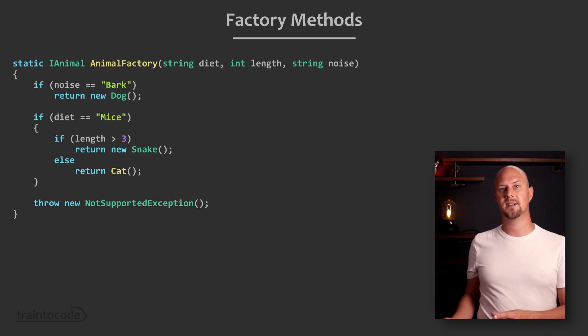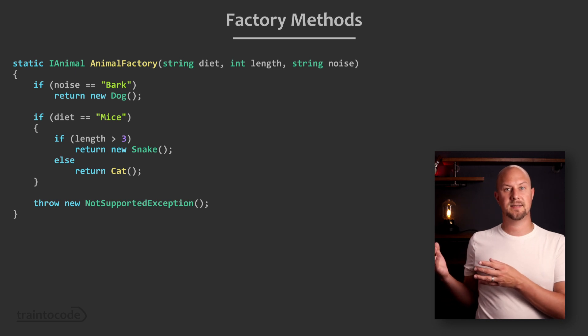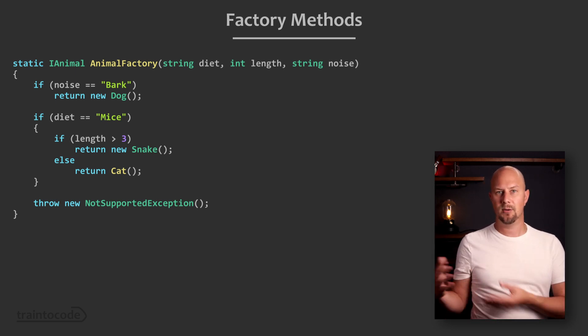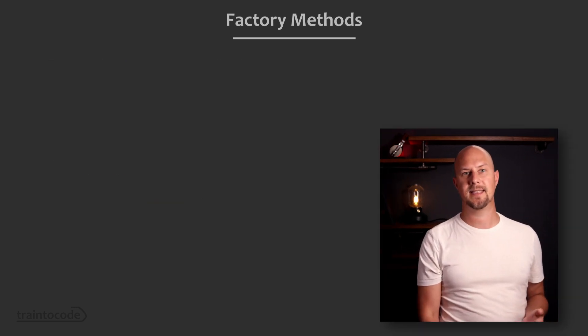The signature of this function looks really simple. It just takes some values and it returns a super generic iAnimal interface and all the complicated selection logic is hidden away inside that.